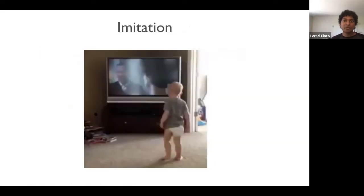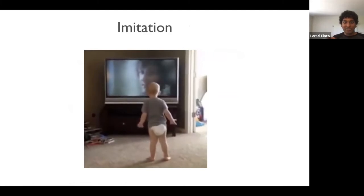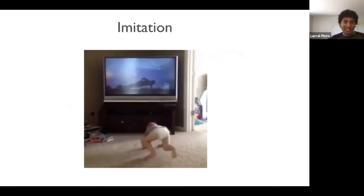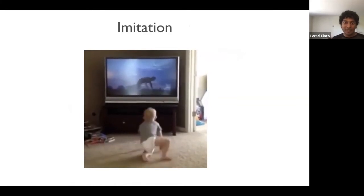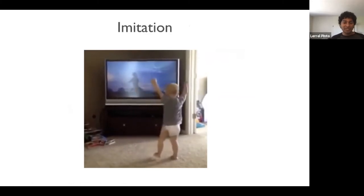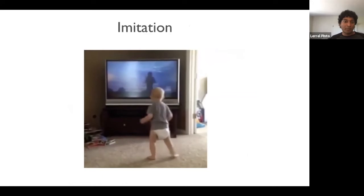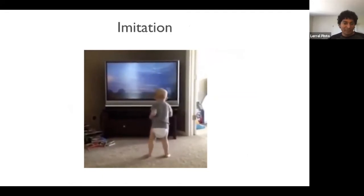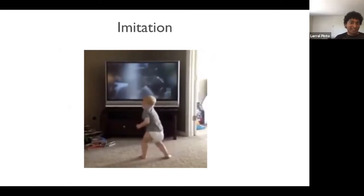So one way that humans do it is by imitation. So over here, when this child is watching this video of Rocky doing exercises, he's very easily able to imitate what he's able to see on screen. And this ability of imitation means that when this baby has to, let's say, do a push-up, he doesn't have to figure out the skill all by himself. He can see someone else solving the task, and then solve the task by itself.